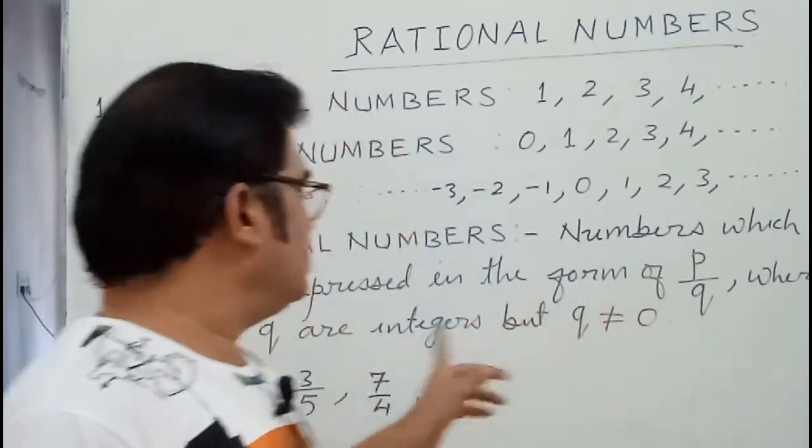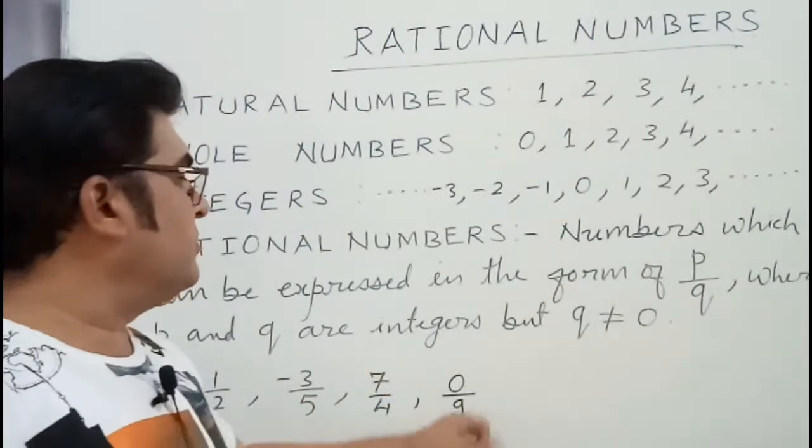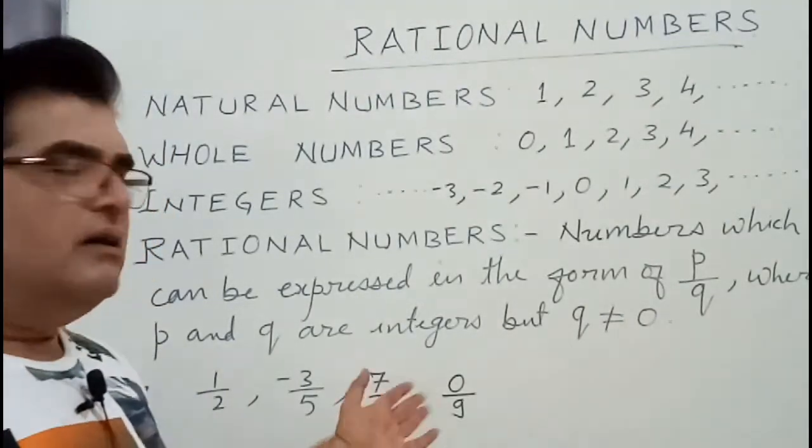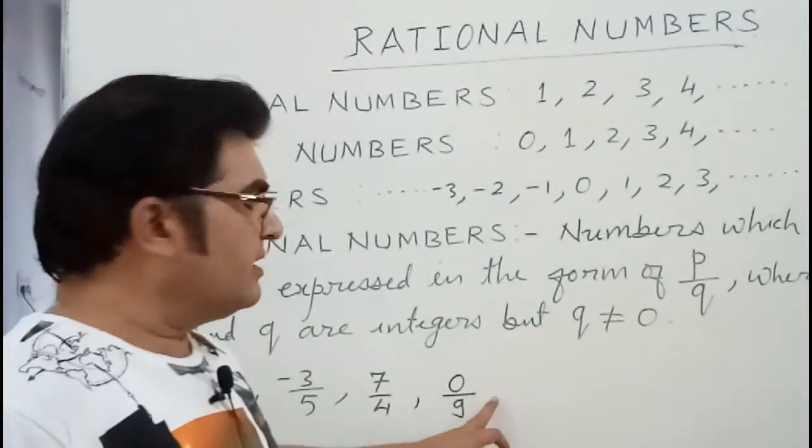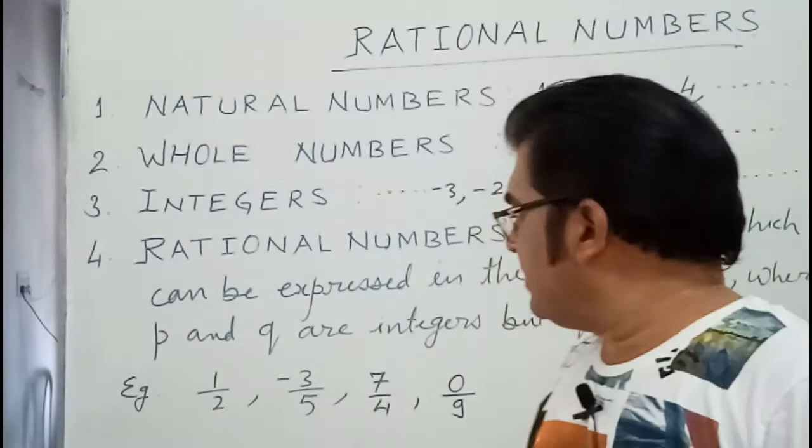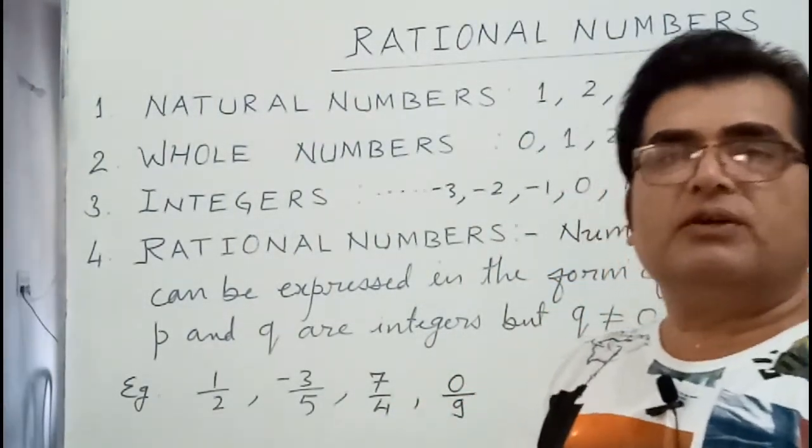Understood. So you take the example as 1 upon 2, minus 3 upon 5, 7 upon 4, 0 upon 9. They are the rational numbers. You can take many more examples, but if we write it 9 upon 0, we said 0 upon 9 is a rational number.